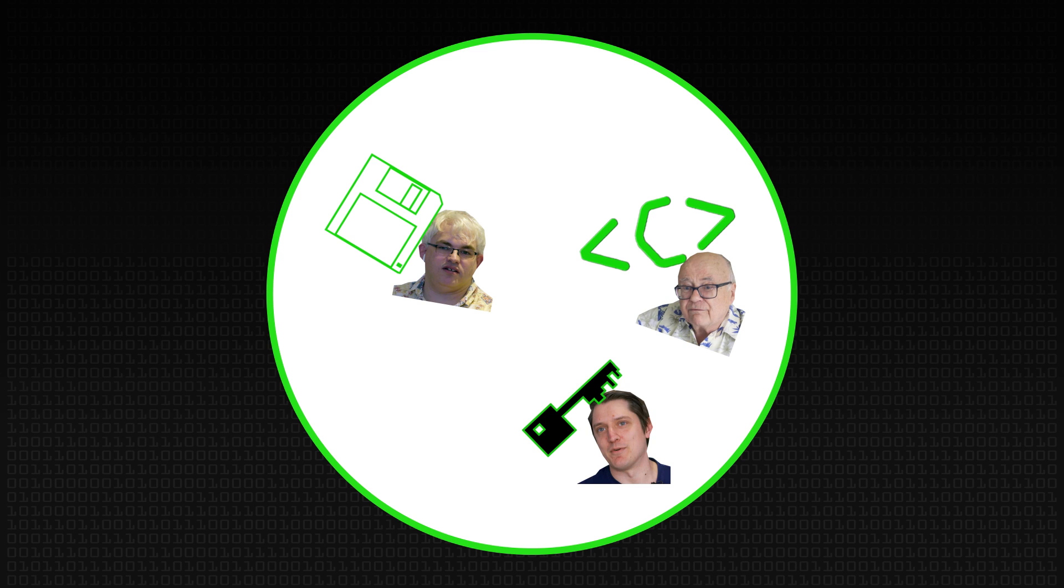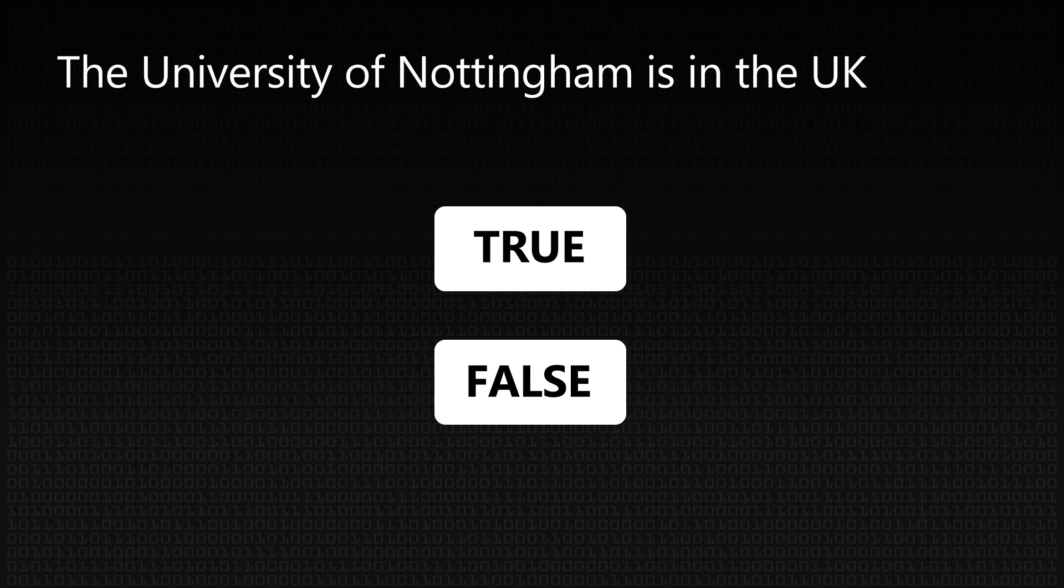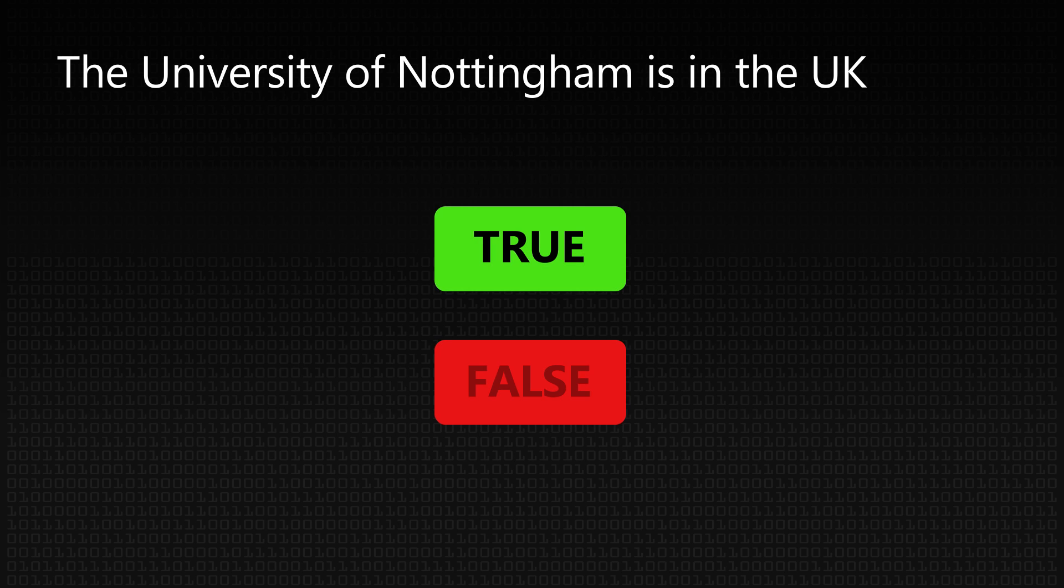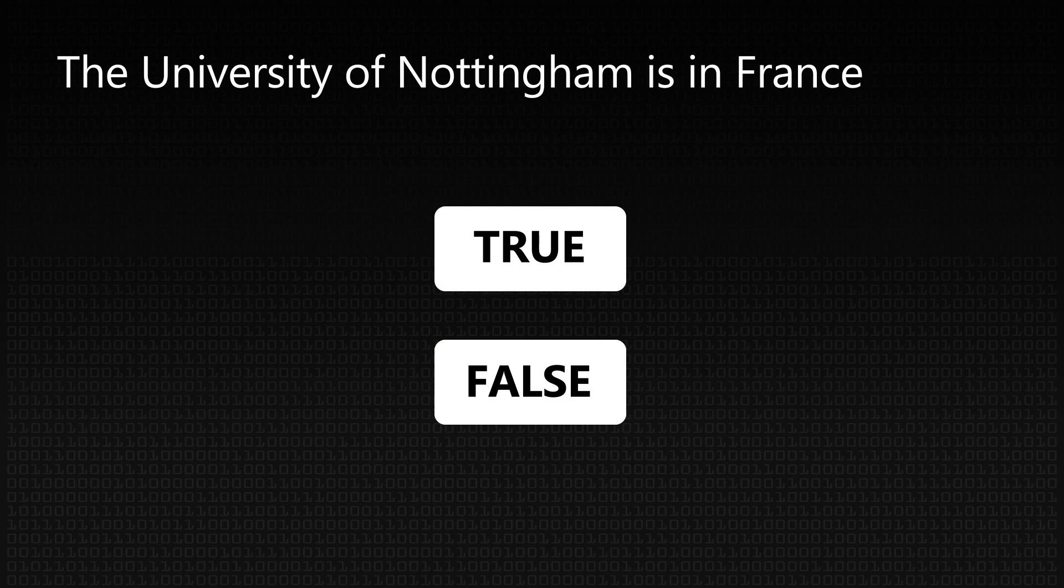For example, it's something that people will objectively agree on. It's something that is true. But that people might lie about. For example, the University of Nottingham is a university in the UK. That would be an example of a true statement. But the University of Nottingham is a university in France is not a true statement.